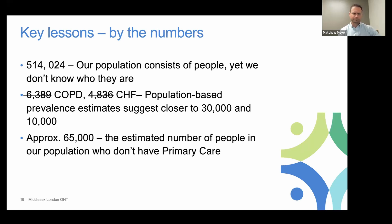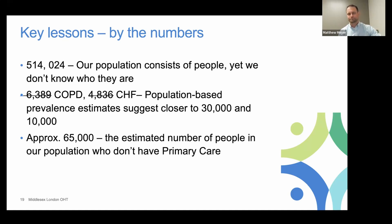One of the most powerful early conversations was when we met with partners from our heart failure clinic — the local experts in heart failure management, actively driving best practice recommendations. We asked how many patients they were supporting and they said about 500 at a time. That 10,000 estimate allowed us to ask: so who's supporting the other 9,500? Those kinds of conversations were turning points — getting people to stop thinking about existing programs and start thinking population-wide. And more recently, we're starting to see prevalence estimates reflected in newer data holdings, giving us a more accurate picture.